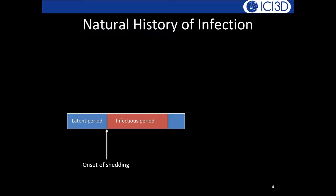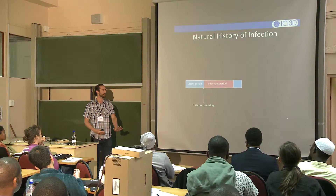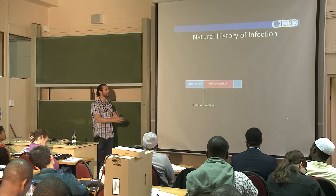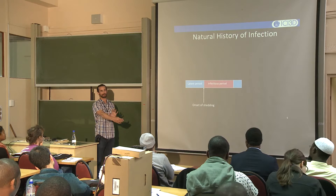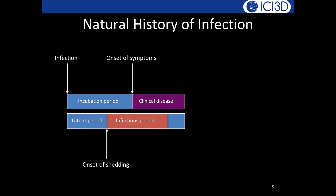At the same time, there's another important timeline. You get infected, but you can't immediately infect somebody else. You are infected and not yet infectious. After this latent period, you start becoming infectious for some amount of time — the infectious period. These are different timelines and they do not have to match up. How well they match up is extremely important for understanding how easy it is to control a disease.